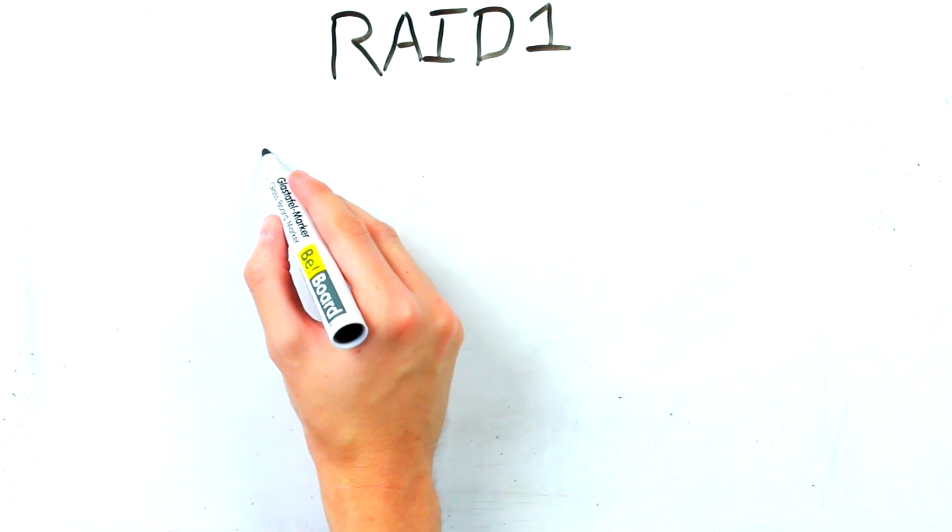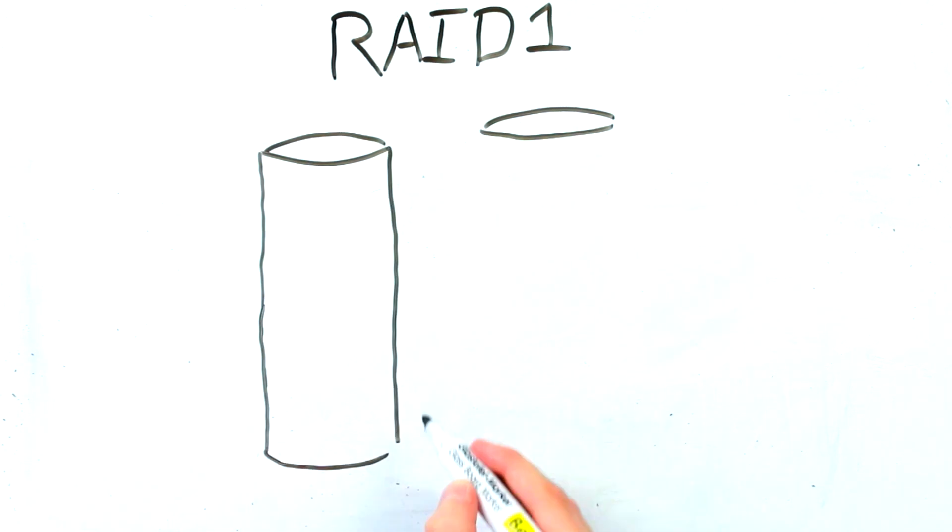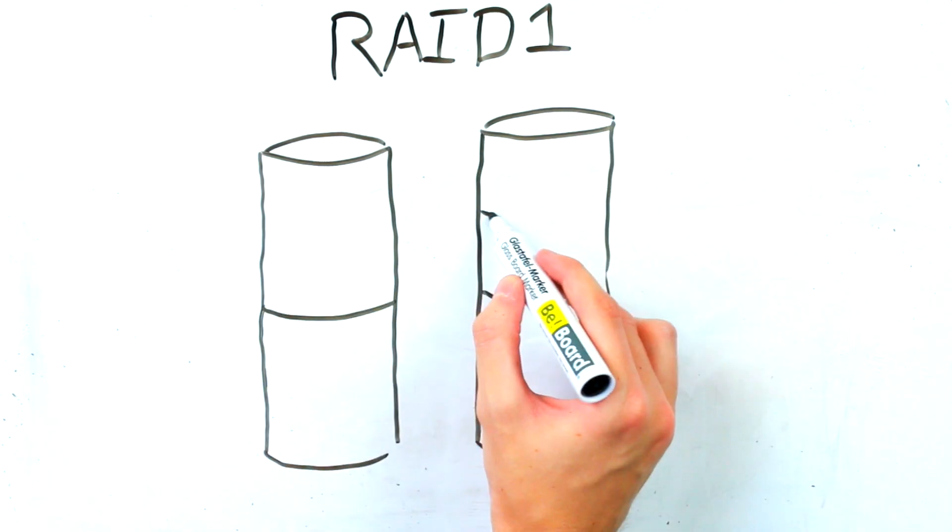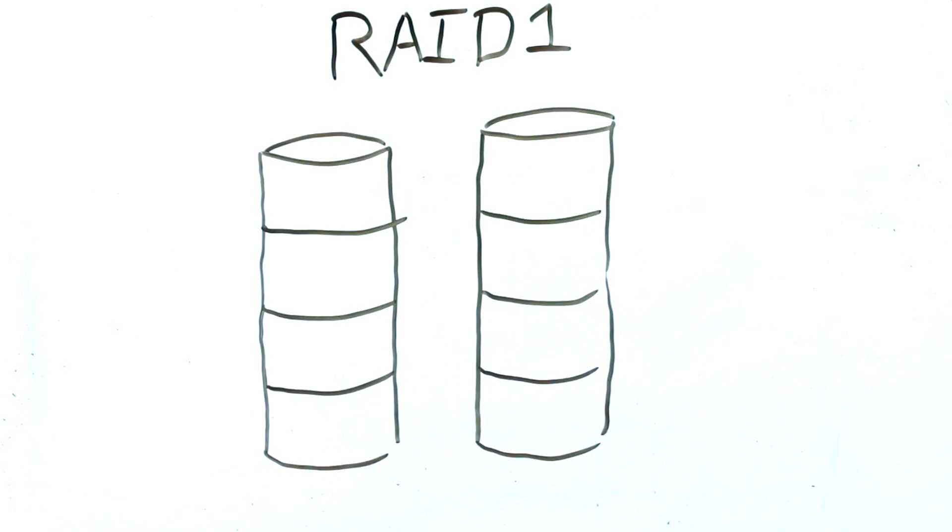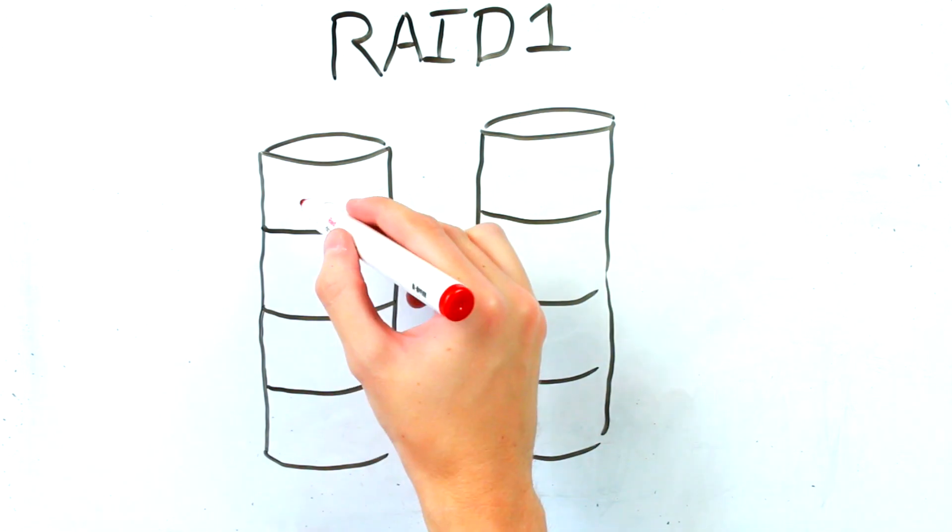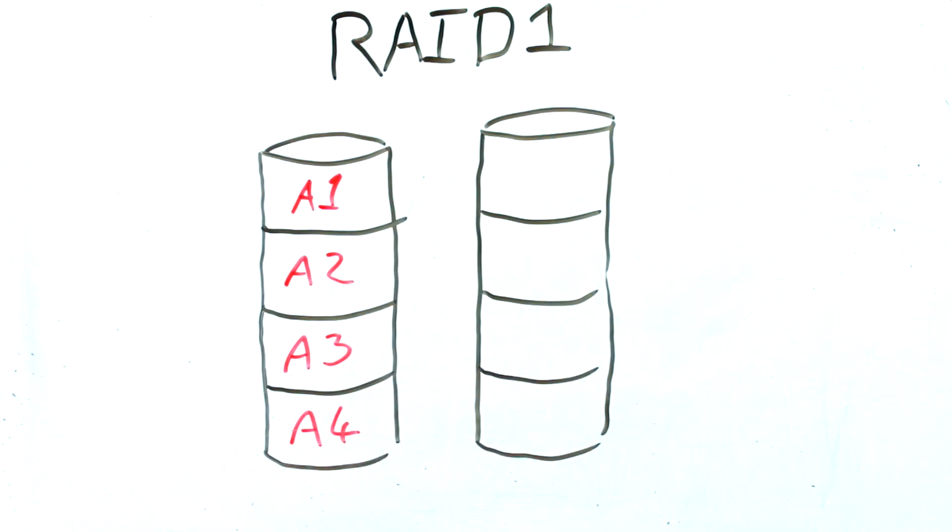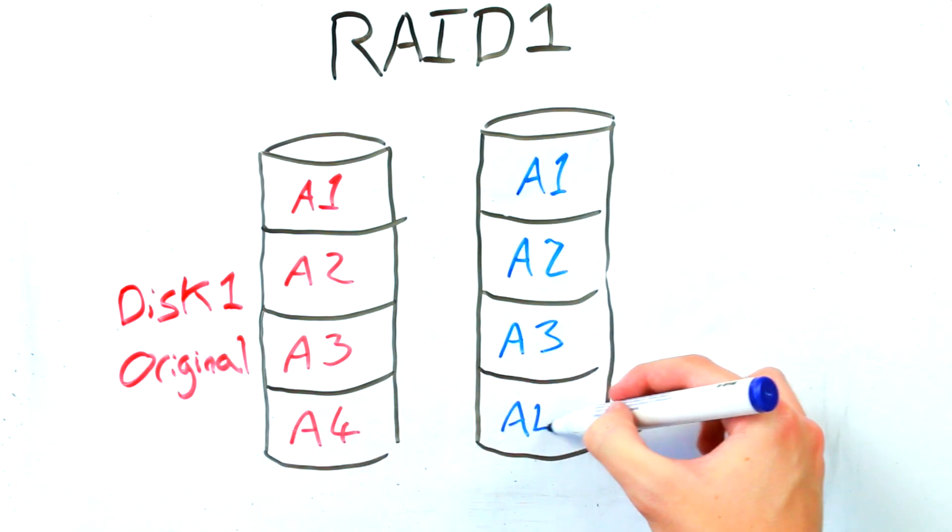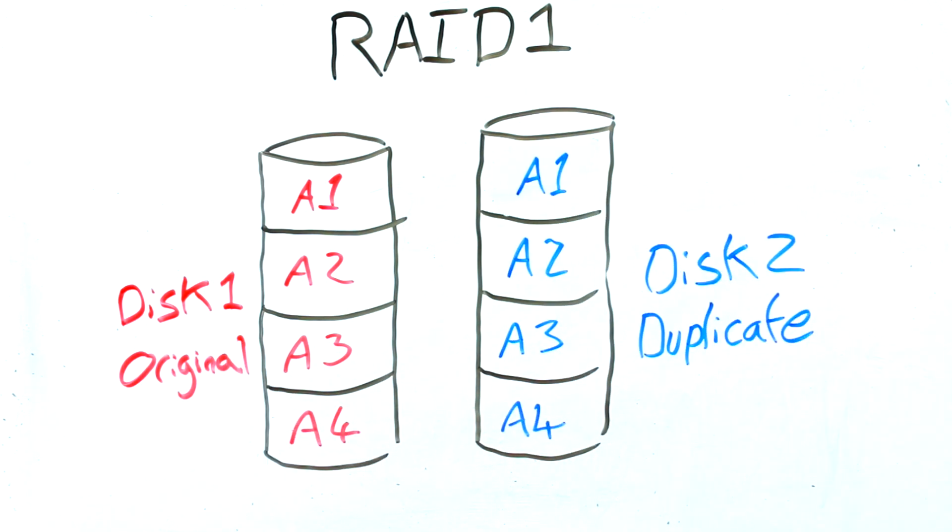RAID 1 is the simplest RAID setting as it duplicates all the footage you record and then saves the information to a pair of hard drives. This is also sometimes called mirroring. This is the best solution for protecting your footage if you have a small two hard drive setup. It does halve your storage space but this is a small price to pay for the security of not losing any of your recordings.